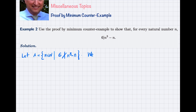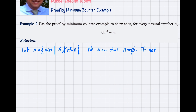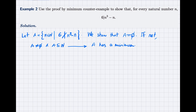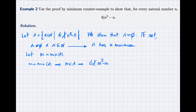The idea is again as before. Let A be the set of all natural numbers such that they violate this desired property — meaning 6 does not divide n³ − n. We again show that A is empty. If not, A is not empty and A is a subset of ℕ, so the well-ordering principle tells me A has a minimum. Let m be the minimum of A. Since m belongs to A, it satisfies the set's condition: 6 does not divide m³ − m.